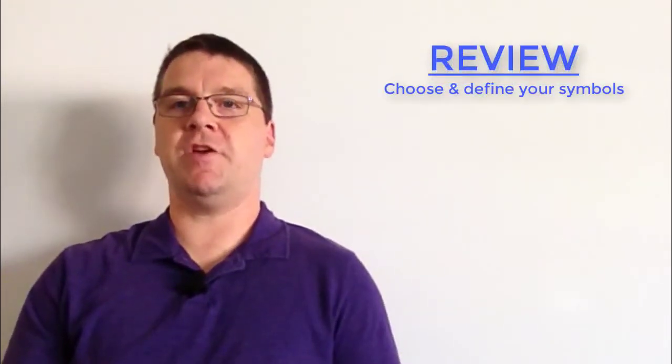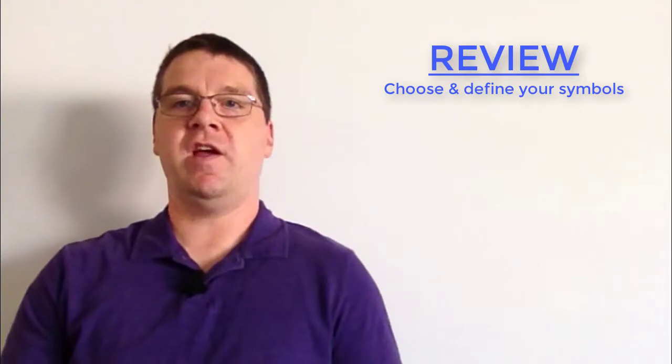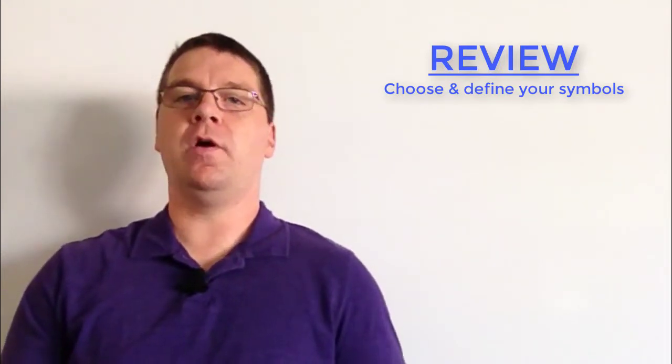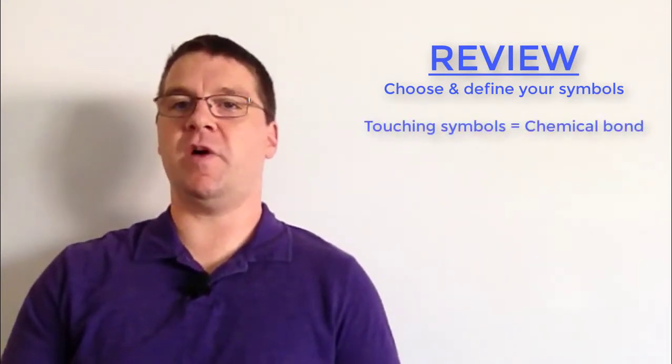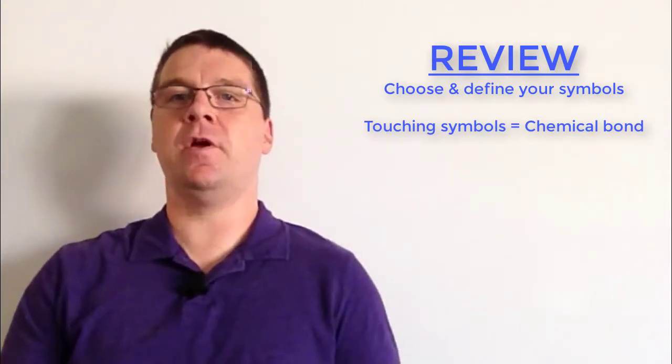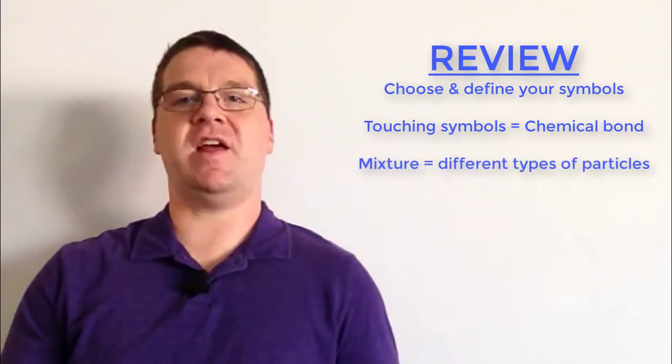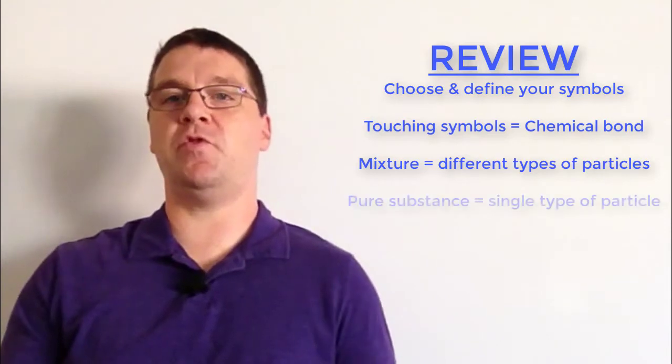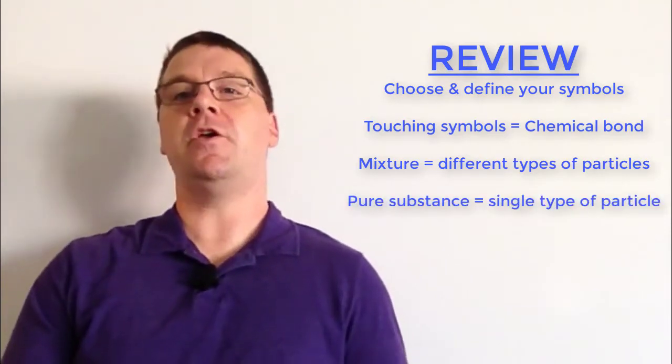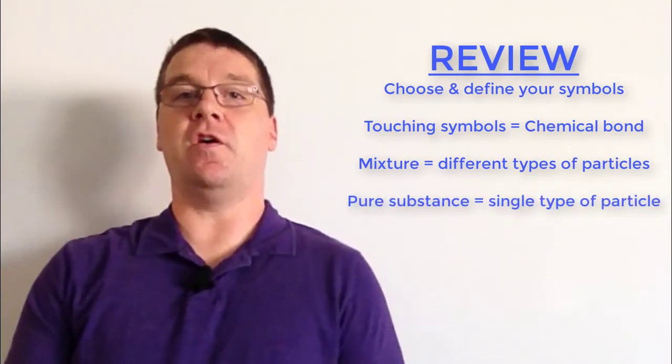When tasked with drawing a particulate diagram it's important to choose your symbols. Make sure that you define your symbols and then as you are drawing the diagram remember to illustrate chemical bonds by having your symbols touching each other. If it's a mixture you're going to have different types of particles. If it's a pure substance like an element or compound you will have just one single type of particle shown.